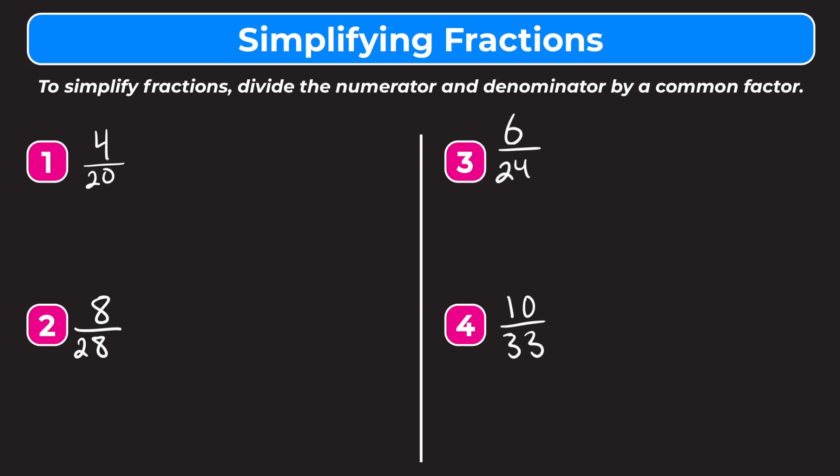Let's start with example 1. We have 4 twentieths. One technique to find the greatest common factor would be to list the factors of both 4 and 20. So let's try that now.